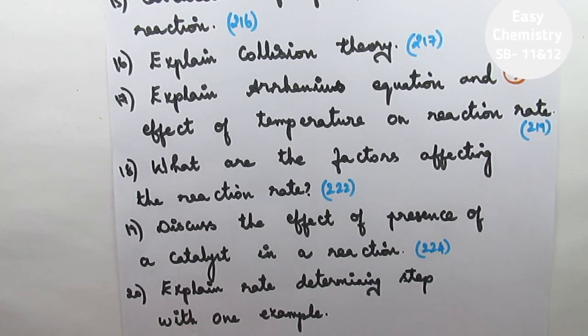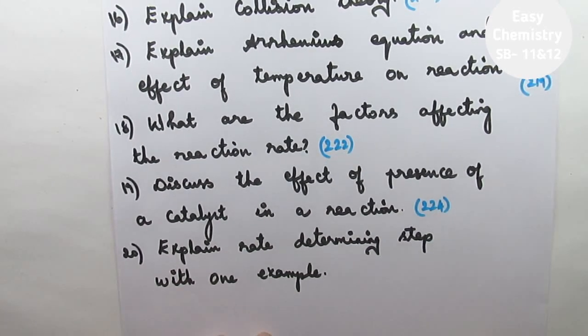Question number 19, discuss the effect of the presence of a catalyst in a reaction. Next question number 20, explain the rate determining step. Is it simpler than RDS?